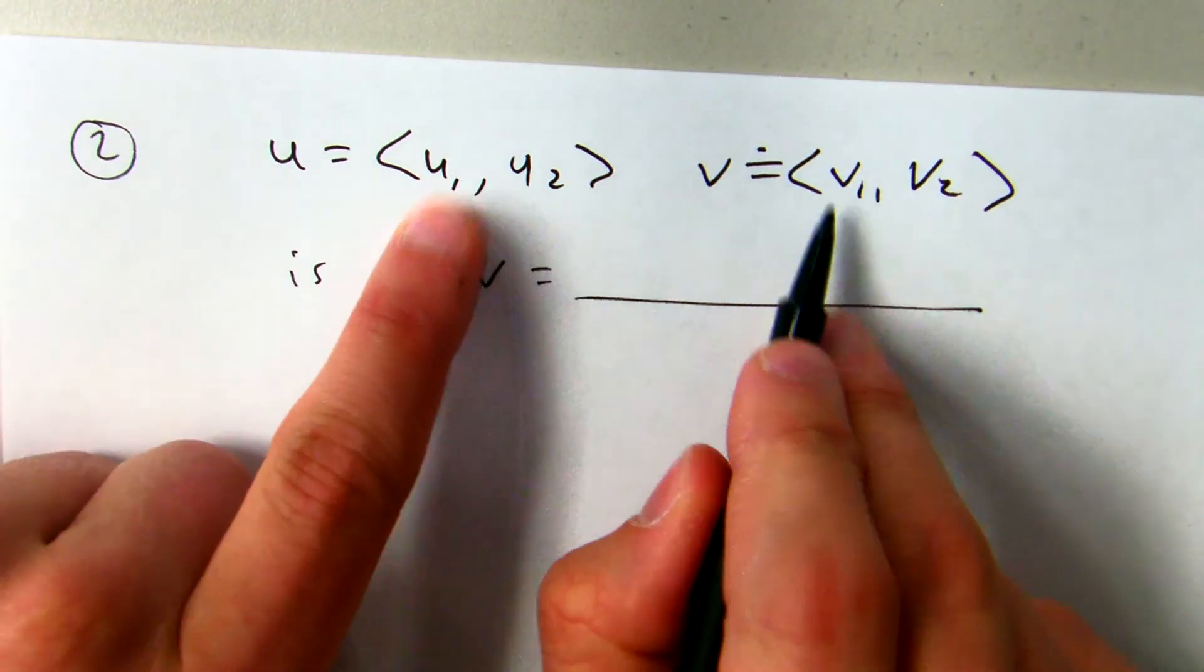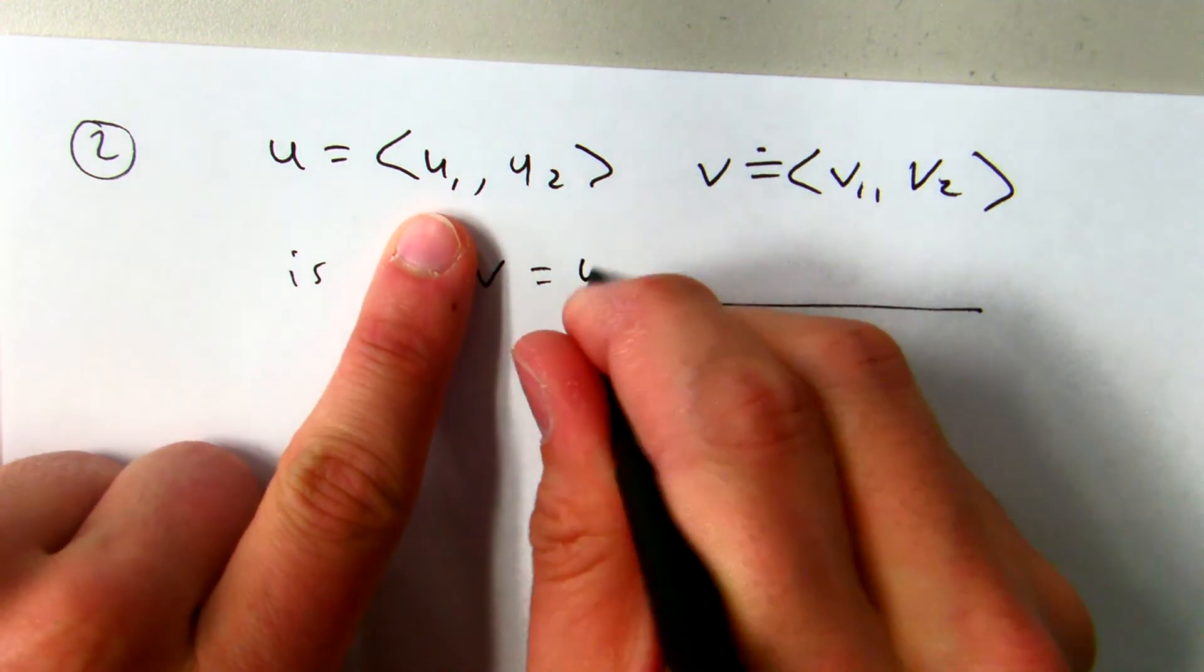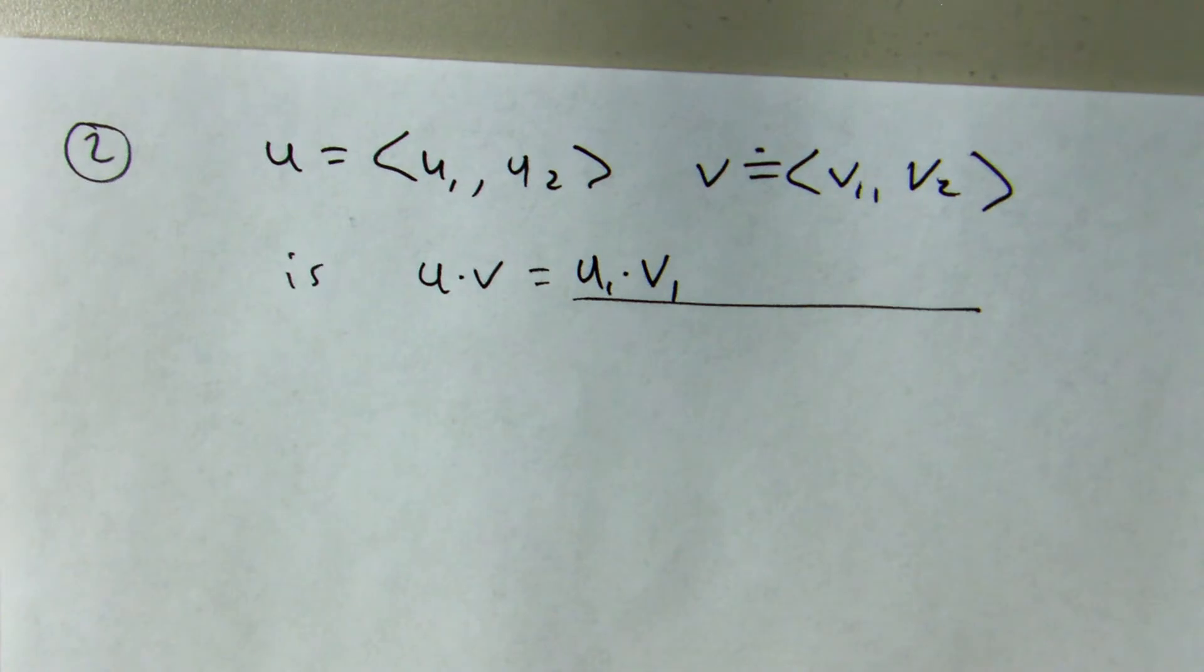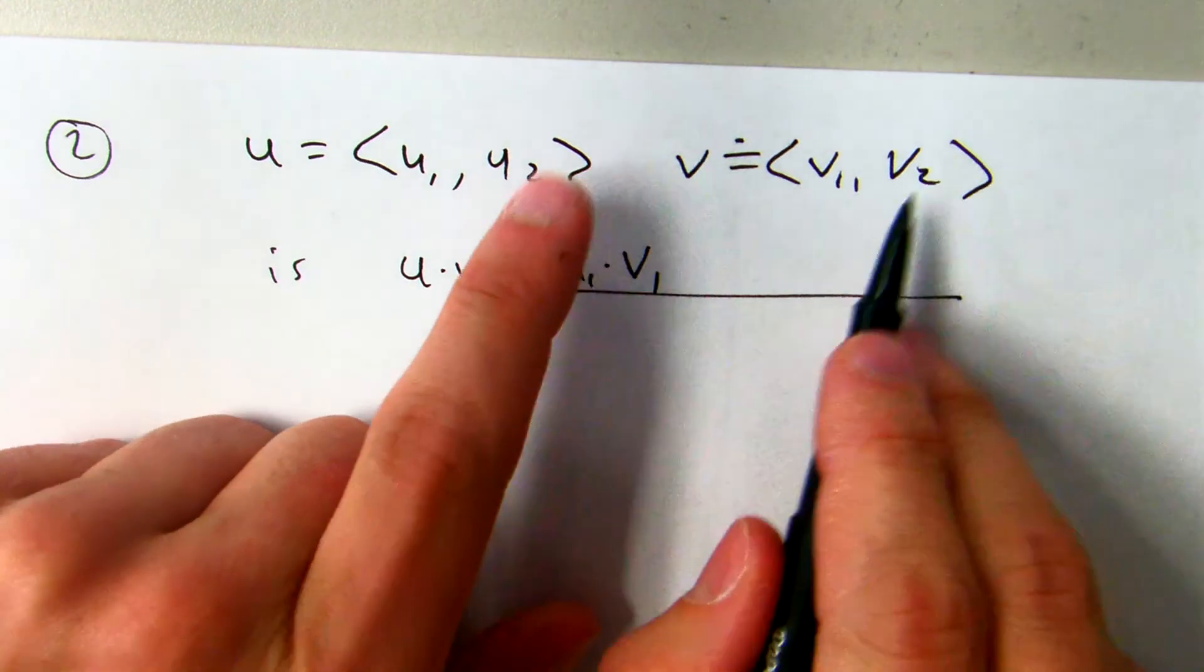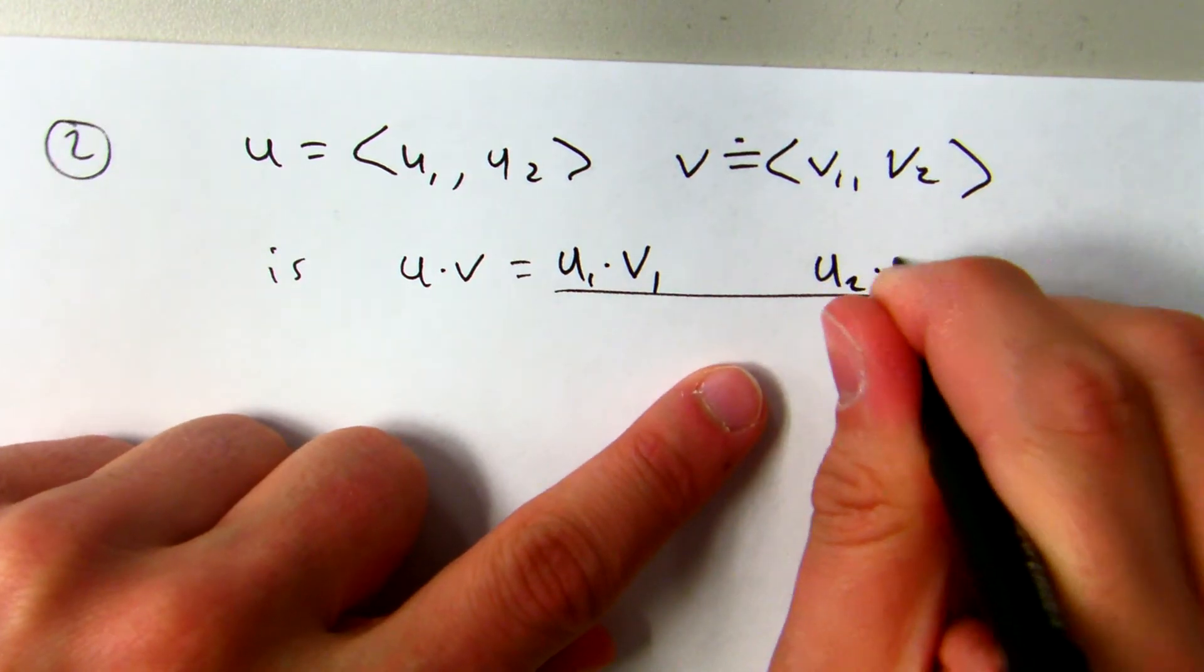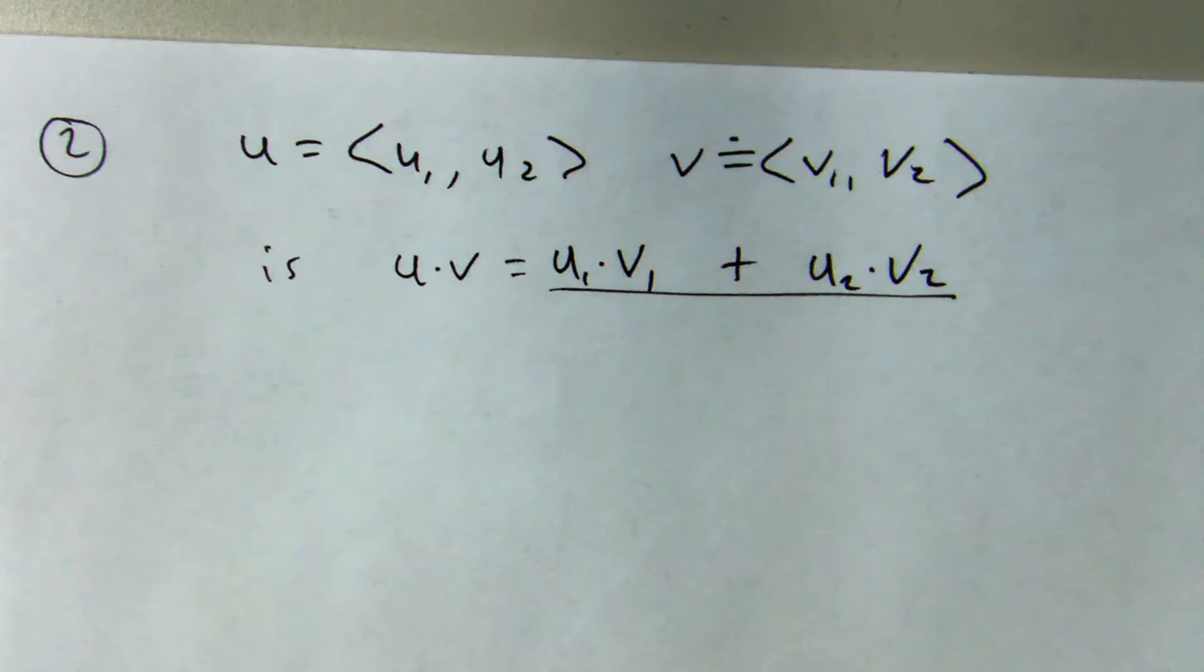So showing that dot product comes from multiplying the horizontal components together, u1 times v1, multiplying the vertical components together, u2 times v2, and then adding those up.